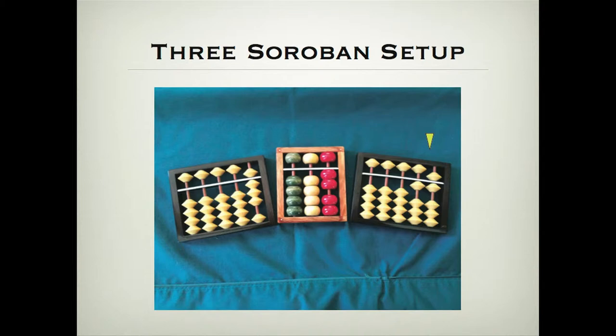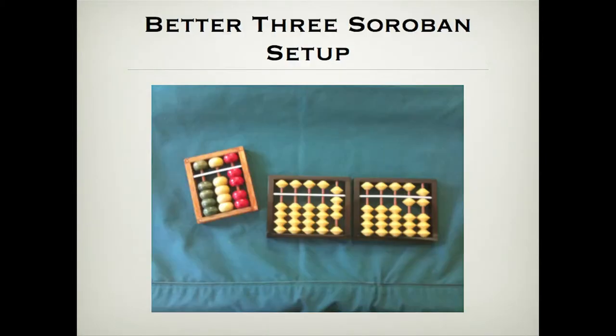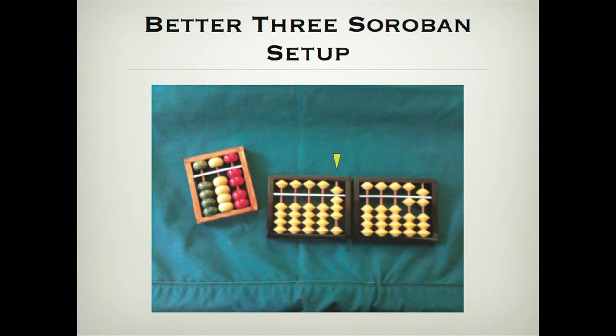So we're going to rearrange this in a more convenient fashion for manipulation with the right hand, by putting the multiplier two over here to the left and putting the multiplicand adjacent to the product, because this is where most of our manipulation of beads will take place. So eight times two equals sixteen.